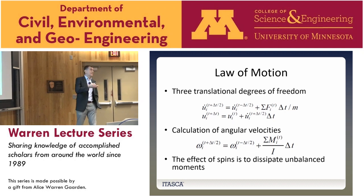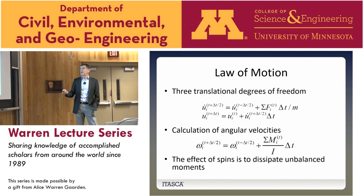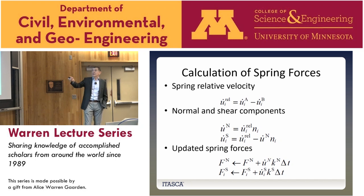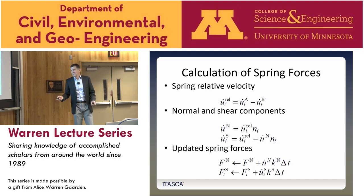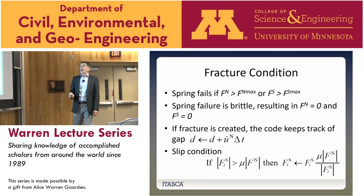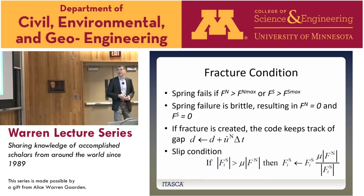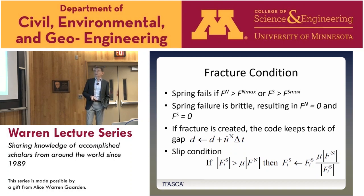Here is basically how the entire calculation cycle is implemented — the equations used to implement the law of motion. We obtain velocities, calculate the relative velocities of nodes associated with a particular spring, decompose them into normal and shear directions, and then apply the constitutive law. Assuming elastic behavior, we calculate the force increment using normal and shear stiffness. However, springs can fail — in tension or in shear if the critical force is exceeded.